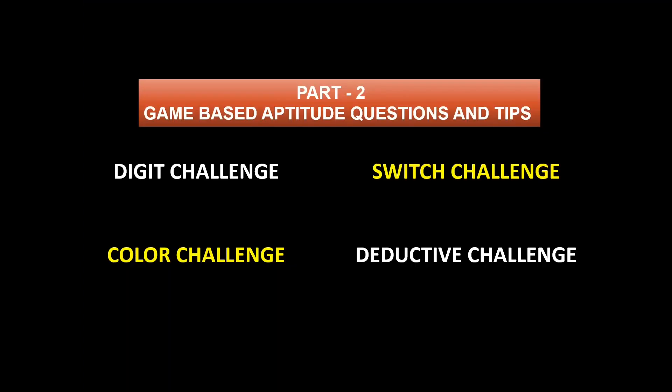This is the second part of the game-based aptitude questions. Click here to go to Part 1 for information on motion challenge, grid challenge, and inductive challenge. As these aptitude questions are fully independent, you can also watch this video completely and then go to Part 1. The link to Part 1 is given in the description below.